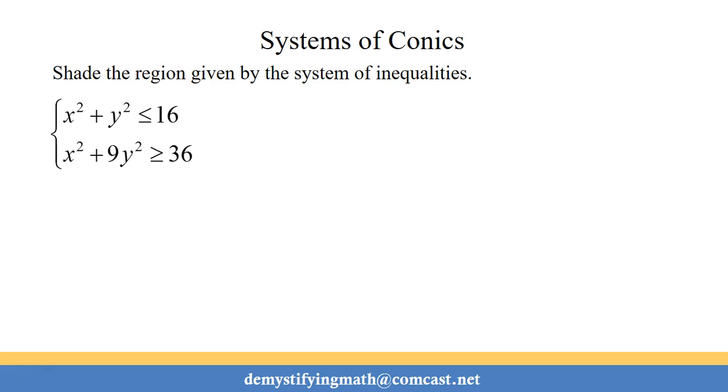Now let's suppose that this was a system of inequalities, where we had x² + y² ≤ 16 and the ellipse is ≥ 36. All you have to do from there to graph the system of inequalities is to take a point and test it. So the easiest point to test is the origin, as long as the origin is not on the boundary curve at all.